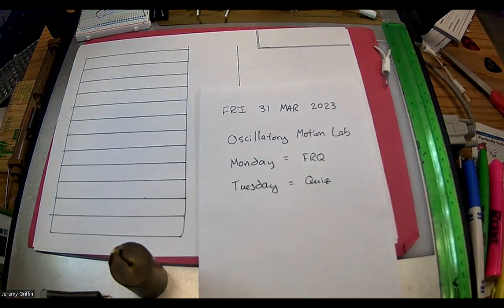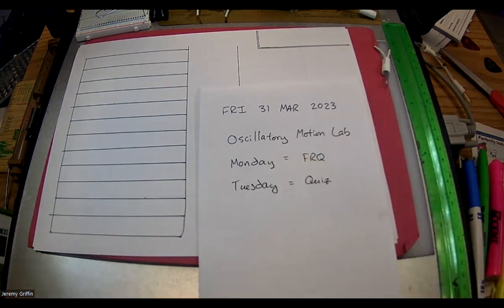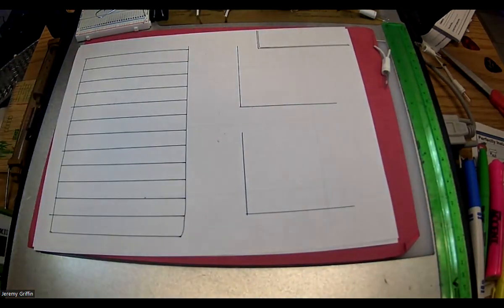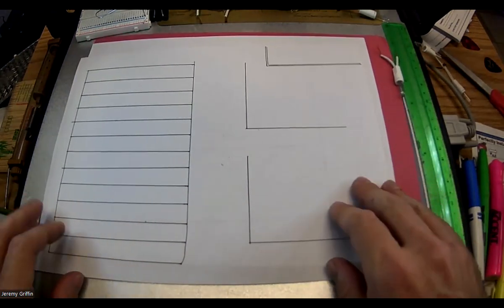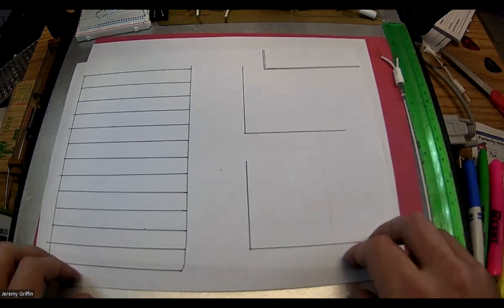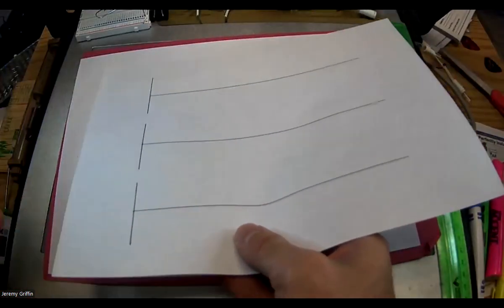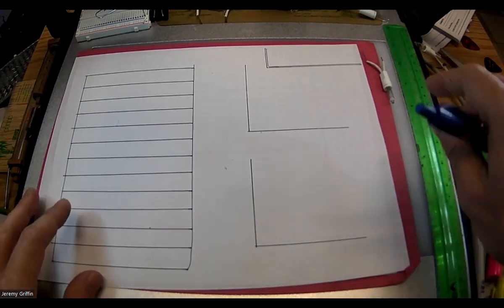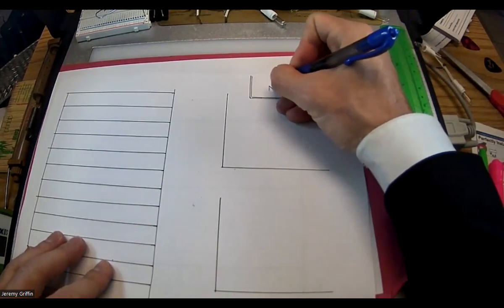I'm going to break out my cell phone as a stopwatch. Let's look at this data sheet. The natural inclination is to set up tables and graphs from scratch, but this is a compromise — I've got tables and graphs already set up with axes, so you guys will at least have to label them, write the units, and fill everything in. Write your name at the top.